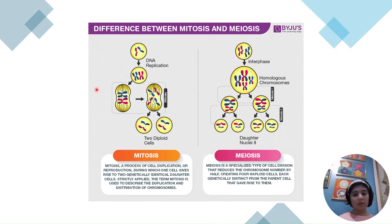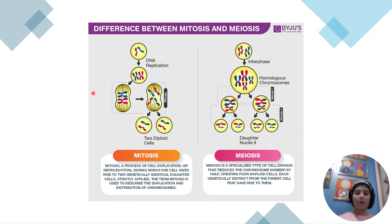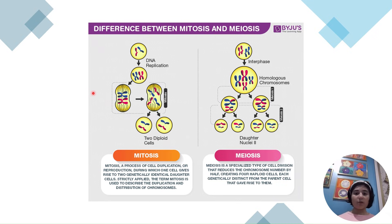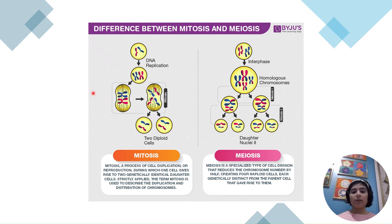To summarize the differences: mitosis is for body growth, development, and repair, while meiosis is for sexual reproduction and results in genetic variety. Mitosis produces two identical diploid cells; meiosis produces four non-identical haploid cells. Meiosis also has doubled steps and includes crossing over in homologous pairs, which is what creates the genetic variety.